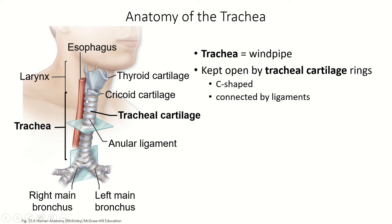It's kept open by these rings of cartilage that we call tracheal cartilage. They go around the trachea and look round, but they're actually not completely round — they're shaped like a C. I'll show you in another picture what the back of the trachea looks like. They're connected top and bottom to each other by a set of ligaments that hold them in place and hold them to the trachea.